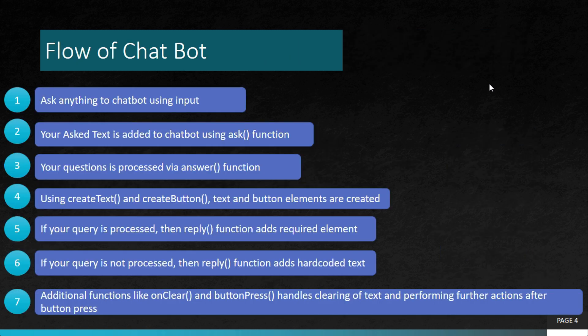For our use case, the replies and questions are already written and the interaction with the user is based on those. The flow is: you ask something to the chatbot using the input box, the chatbot triggers an ask function, and whatever you've written in the input box is transferred to the chatbot interface as a simple text element.